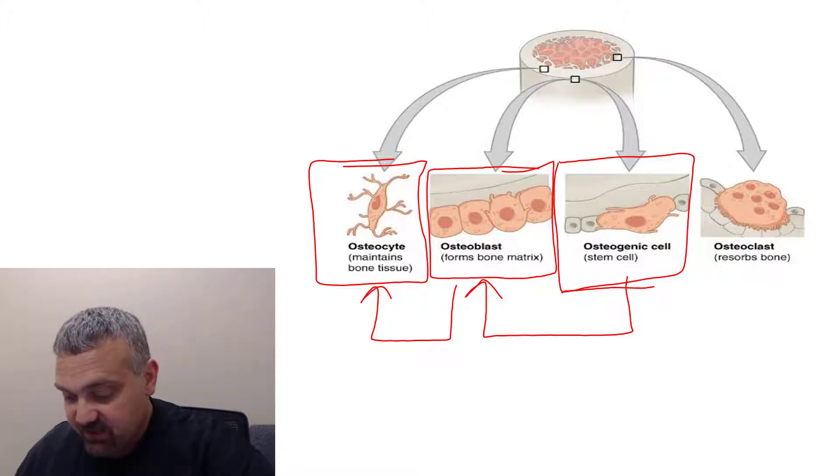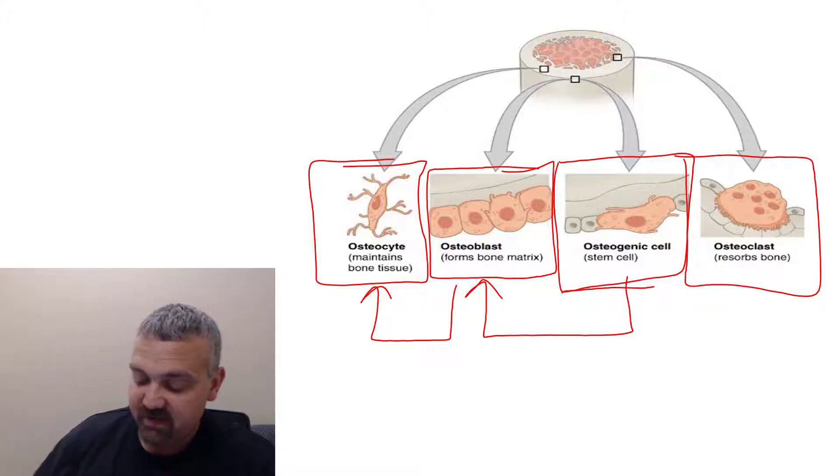Now the osteoclast is totally separate. For years, they argued about where these cells came from. They now know that monocytes, macrophages actually fuse together to form them. So they're a real special cell. And you can see from the drawing here, they have multiple nuclei. They're usually going to have half a dozen or so.